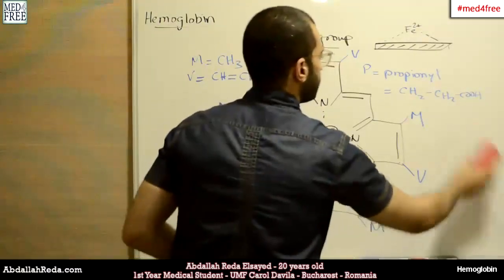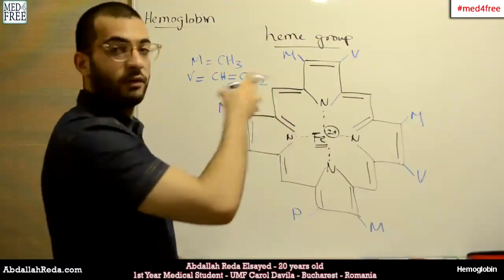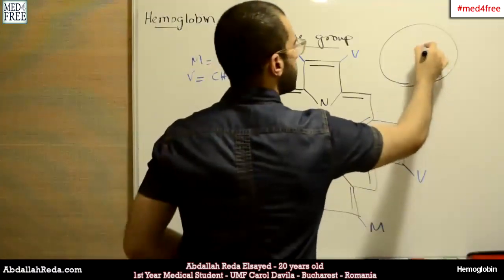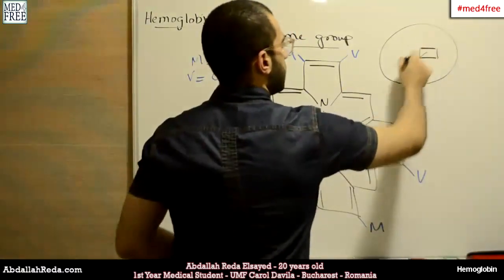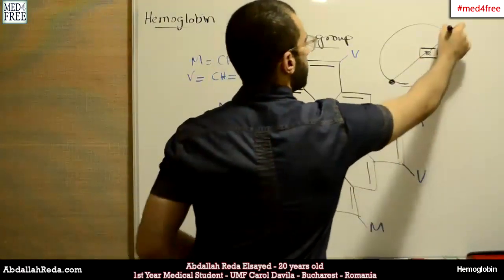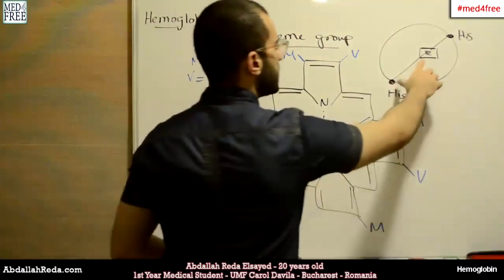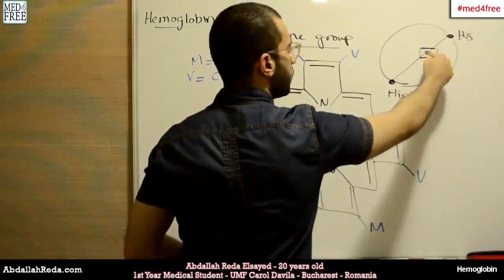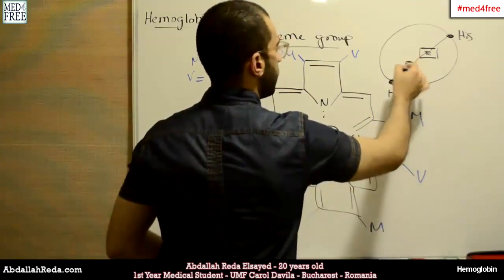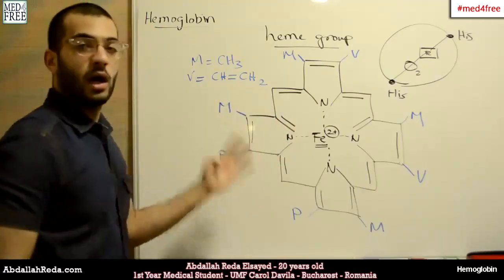This heme group structure is found within the subunit of hemoglobin. The heme group is attached to the subunit, with the iron as the point of attachment. On the two sides of the iron, there is a distal histidine and a proximal histidine. The proximal histidine is nearer to the iron and the distal histidine is farther from it. Oxygen will bind on the distal side.